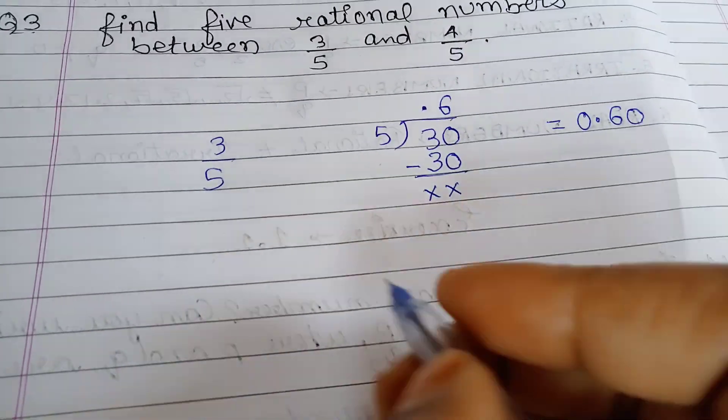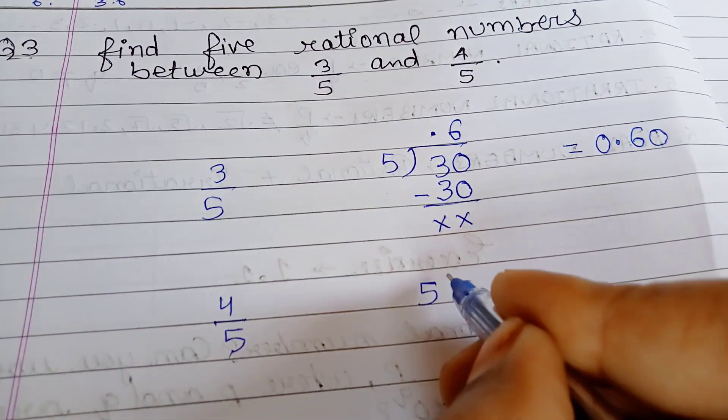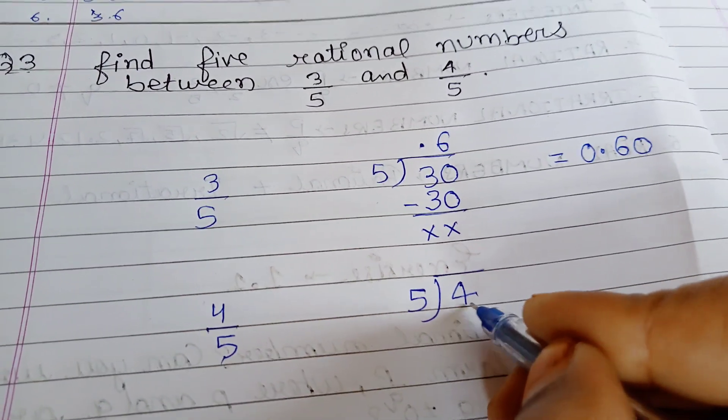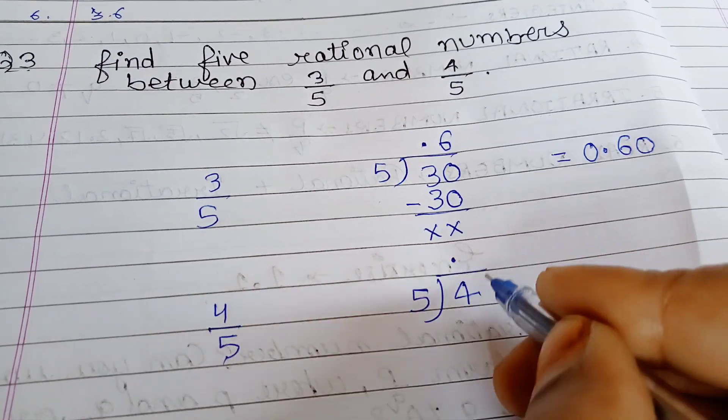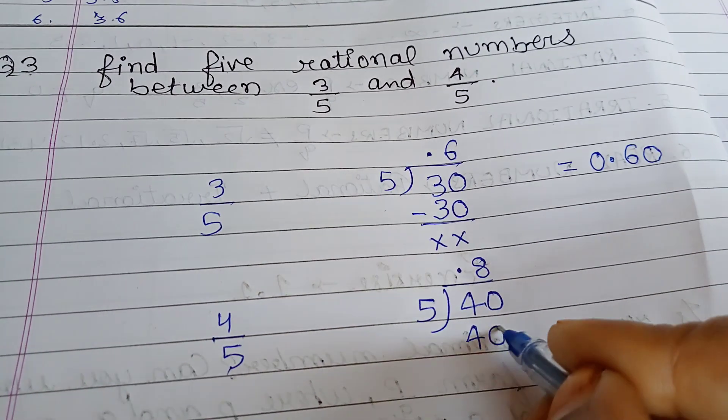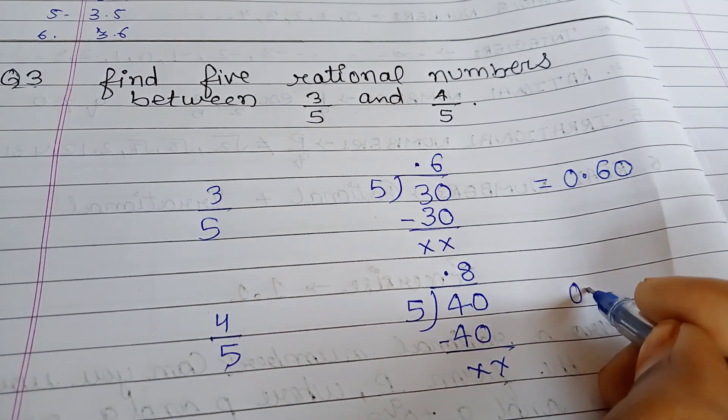This process is further for 4 upon 5. Now we will solve 4 by 5. Because 4 is small, so we will add decimal and zero. The answer is 0.80.